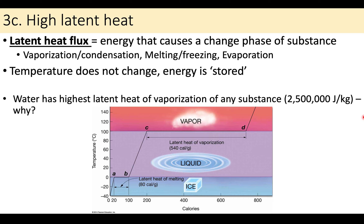The next property is latent heat. Sensible heat is changes in temperature you can feel; latent heat — or latent heat flux — is energy that causes a change in phase (evaporation, melting, freezing, condensation, vaporization) without changing temperature. Water has a very high latent heat of vaporization — actually the highest of any substance. It requires a lot of heat to vaporize from liquid to vapor.